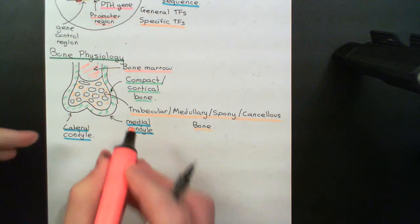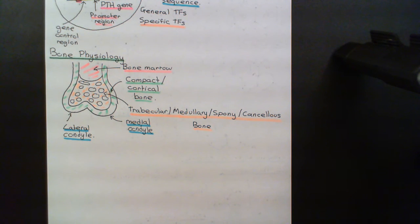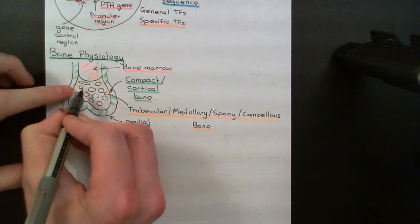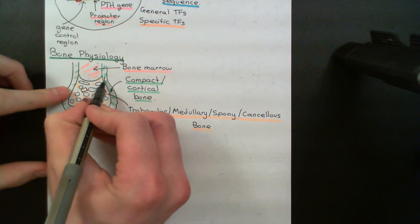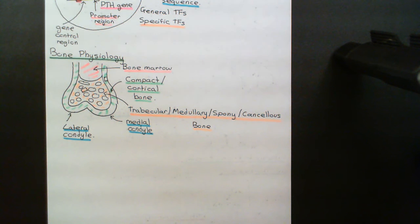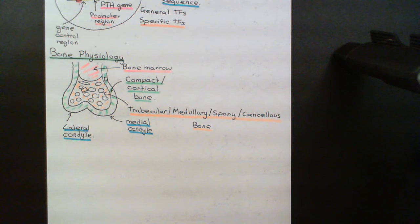Although the macroscopic appearance of cortical and trabecular bone is different, their microscopic appearance is exactly the same. If you take a small section from either type and look at its microscopic structure, you will see the exact same thing. So now let's discuss what the microscopic structure of bone actually is. Bone is made up of two principal components: the bone matrix and the bone mineral.